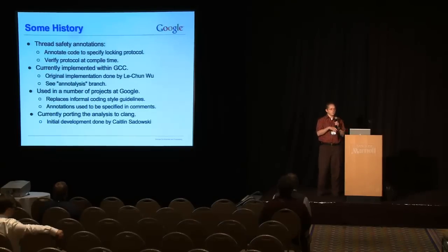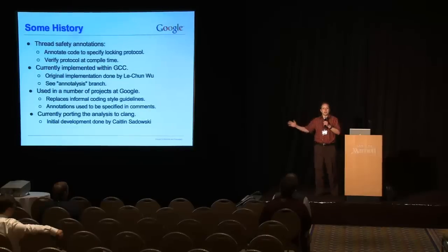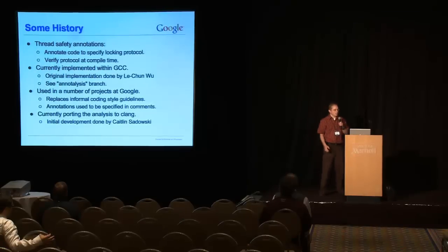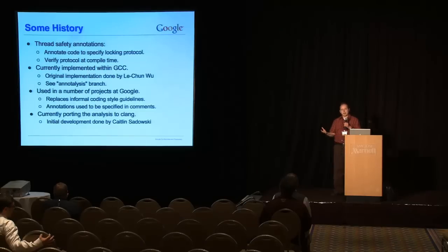It's checked in upstream. You can look at it in the analysis branch. It's actually used in a number of projects at Google. And the design of it is a little bit of a historical artifact. It replaced some informal coding-style guidelines. When we started doing multithreaded code, the guidelines were, please put these things in comments. If you have stuff protected by mutex, put it in the comment, which mutex protects which thing. And so all we really did is, in the initial GCC version, is formalized these comments and wrote a checker to check them.